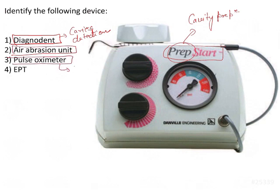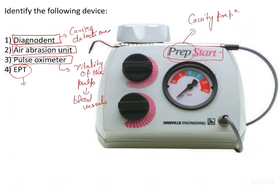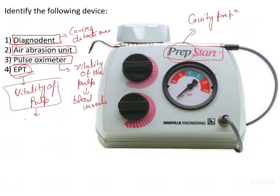Then we have the pulse oximeter, which is used for measuring the vitality of the pulp — it generally detects the vitality of the blood vessels. Then there's the electronic pulp tester, which also checks the vitality of the pulp, although it is not a definitive method.